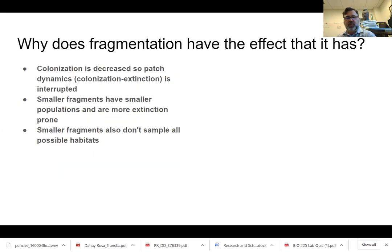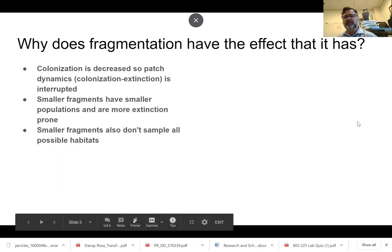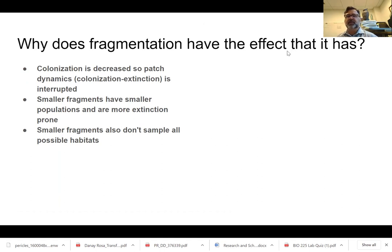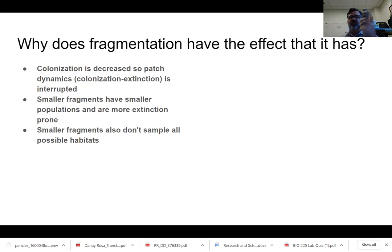The question is, why does fragmentation have the effect that it does? We know that colonization is decreased. So you're going to disrupt that normal population — in continuous habitat, you have organisms moving around between patches. The population itself will move around, but on the whole it could be stabilized by this extinction-colonization dynamic. But when you fragment, you essentially only have extinction without subsequent colonizations.